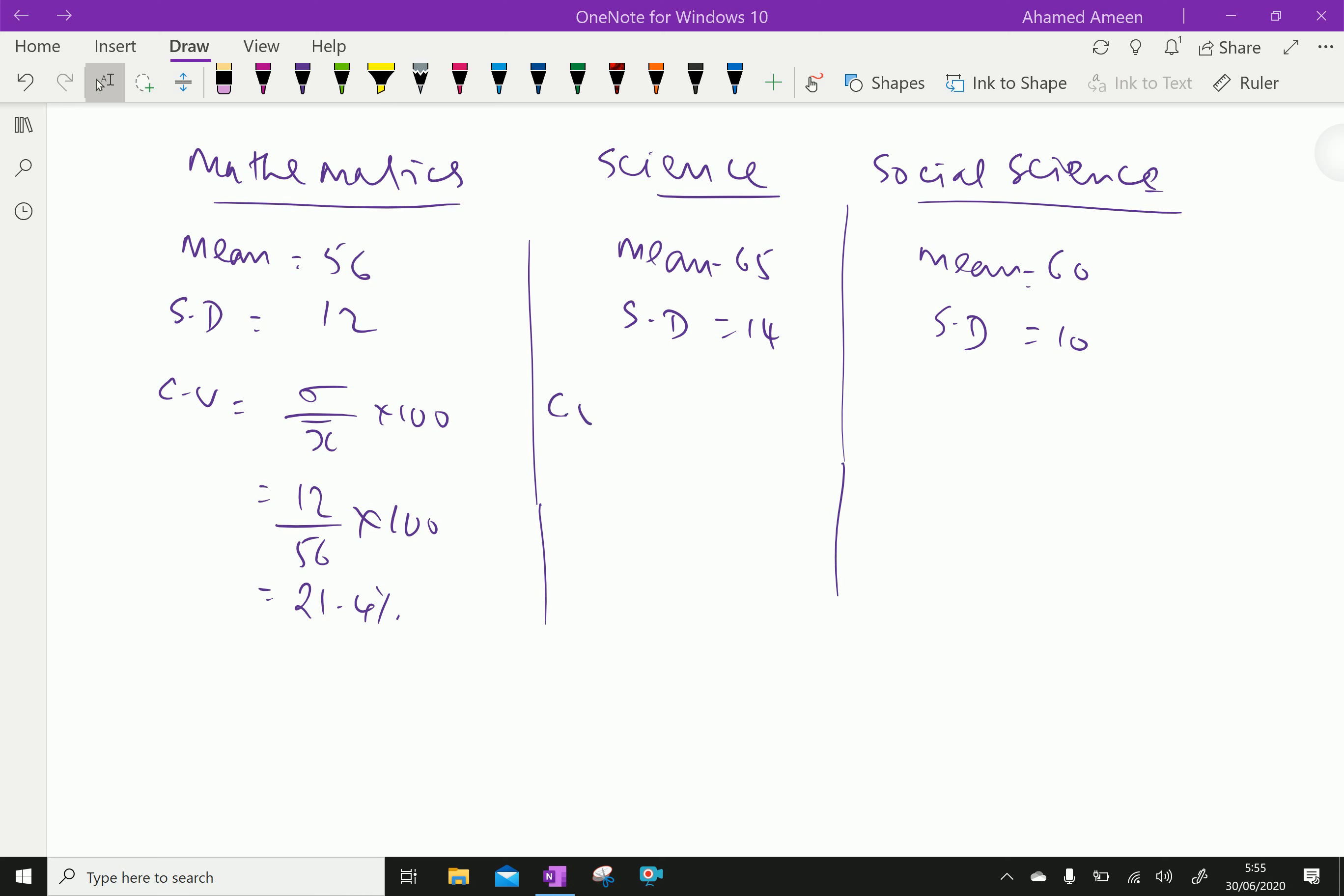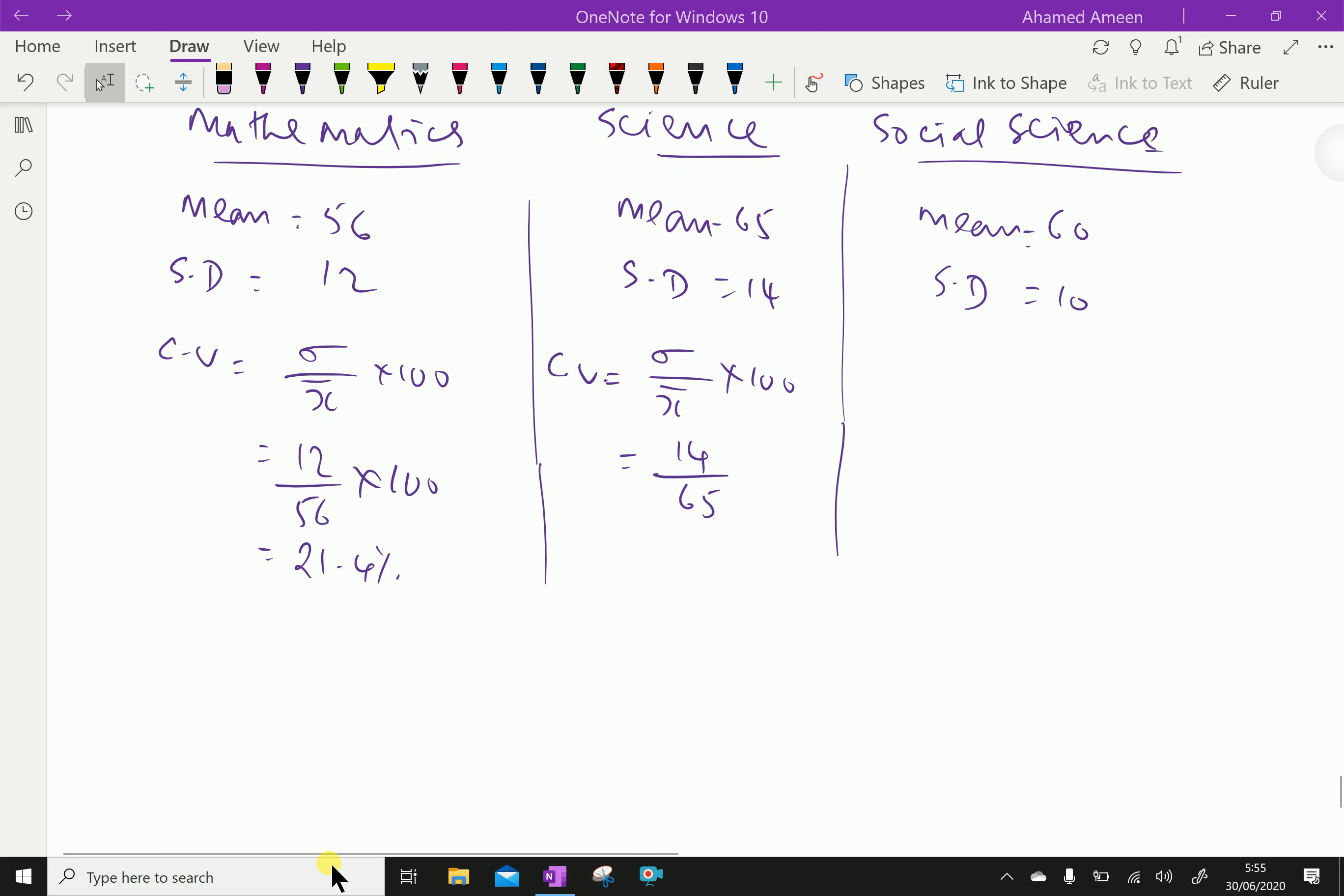For science, coefficient of variation is sigma over x bar into 100. Sigma is 14 over 65 into 100.